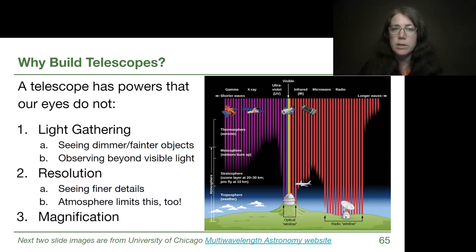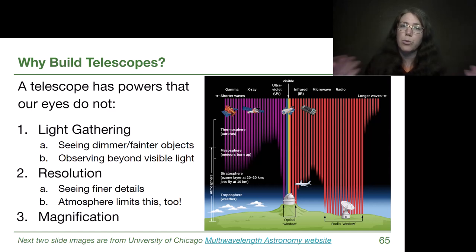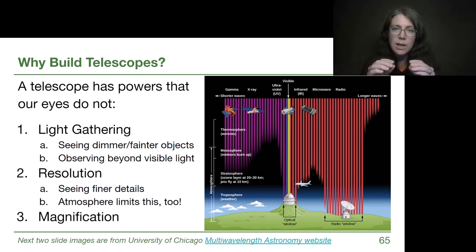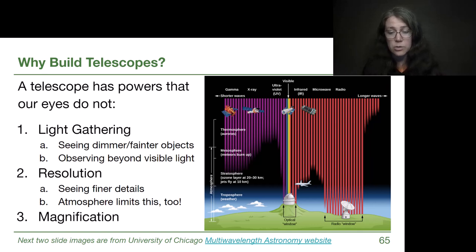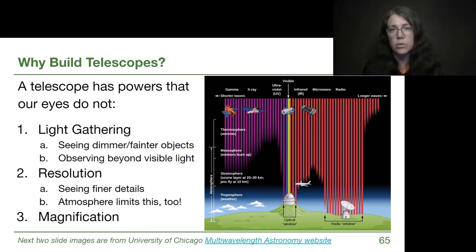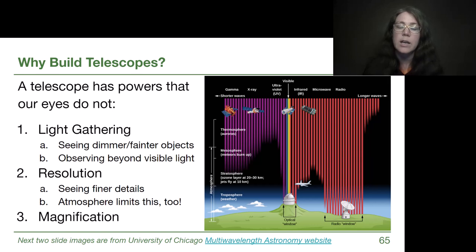The last power a telescope has is magnification. Although that might be the easiest to imagine — if we've looked through binoculars or at the moon through a telescope — that's actually the weakest of the three powers. If you zoom in on something too faint or too blurry to see, you're just going to see a zoom-in of a faint, blurry thing. You need strong light gathering and strong resolution to effectively use magnification power.